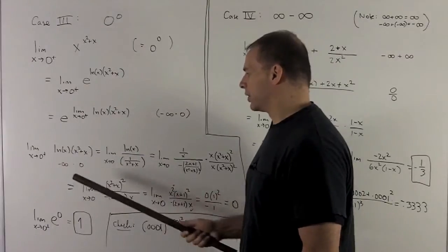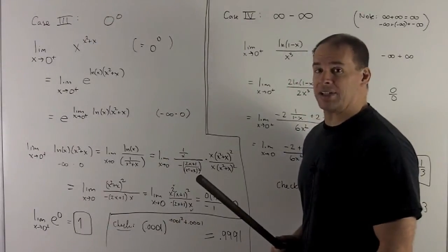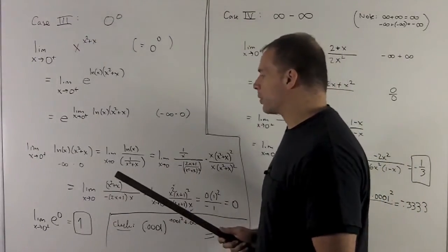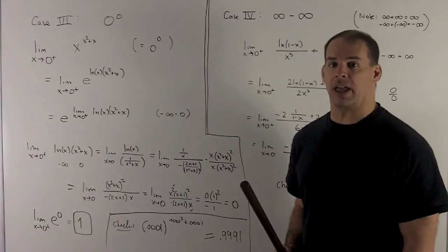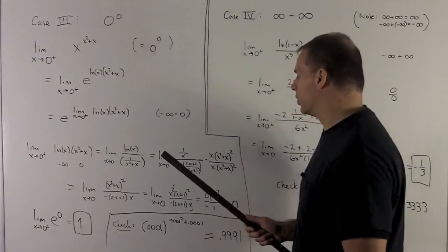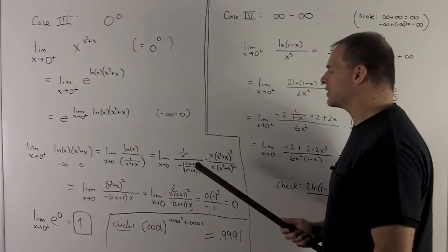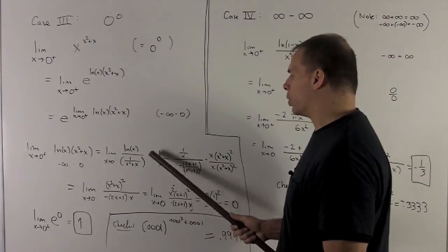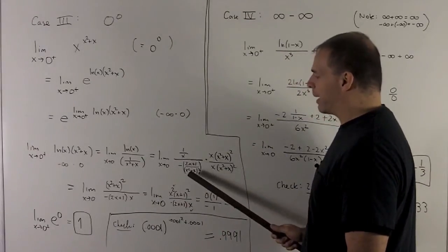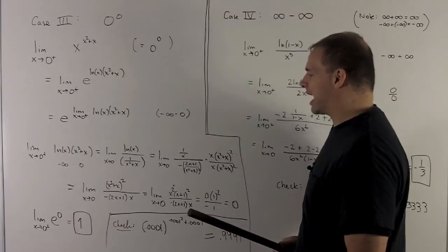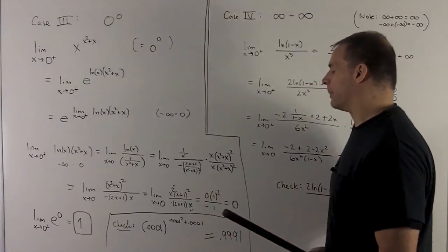And x² + x goes to 0, so this is a 0 times infinity form — we need to push one into the denominator. The safer choice is to move x² + x to the denominator. Applying L'Hôpital's rule: derivative of the top gives 1/x. For the derivative of the bottom — using the special form of the quotient rule — we square the bottom, take its derivative (2x + 1), put that in the numerator with a minus sign.